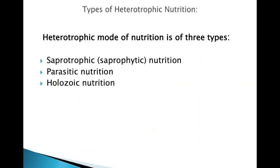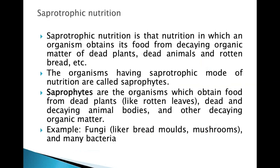Heterotrophic mode of nutrition is of three types: saprotrophic nutrition, parasitic nutrition, and holozoic nutrition. Saprotrophic nutrition is dead nutrition, in which an organism obtains its food from decaying organic matter — dead plants, dead animals, rotten bread, etc. Organisms having this mode are called saprotrophs.